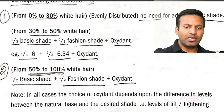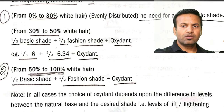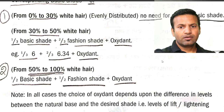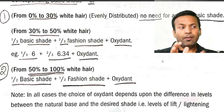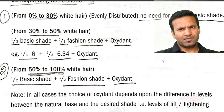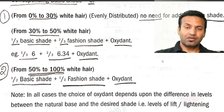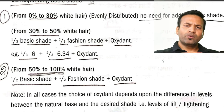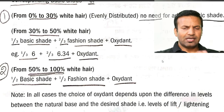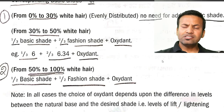Number first example है: 0 to 30% white hair — evenly distribute, no need to adding base shade। अगर आपका 30% से कम सफेद बाल है client का, आप idea लगा सकते हो ना बालों को देखके head पे — हाँ, शायद 30% होगा, या 40% होगा। 50% मतलब आधे काले, आधे सफेद। तो इस हिसाब से आपको idea लगाना है कि वो बाल जो हम देख रहे हैं वो 30% से कम हैं।